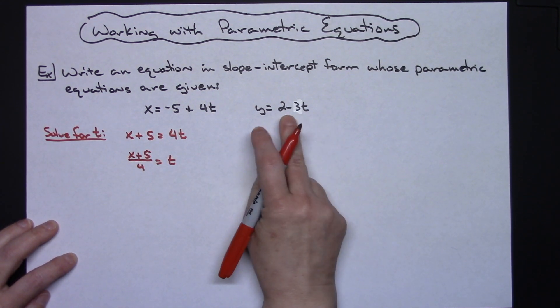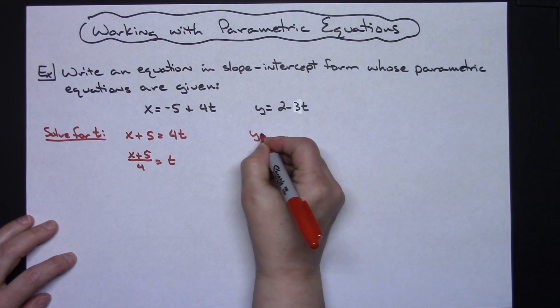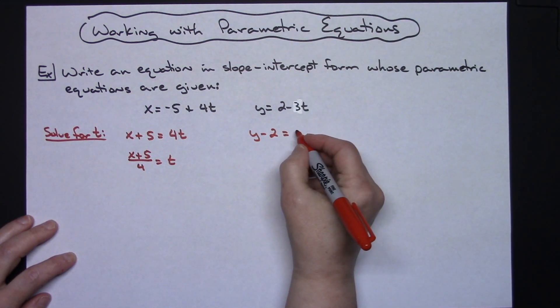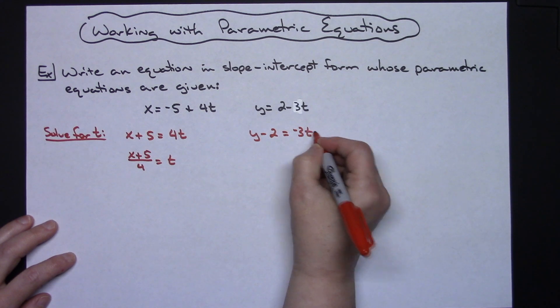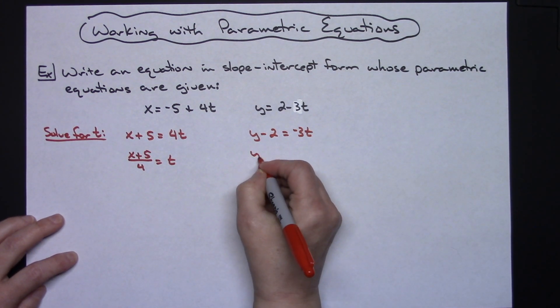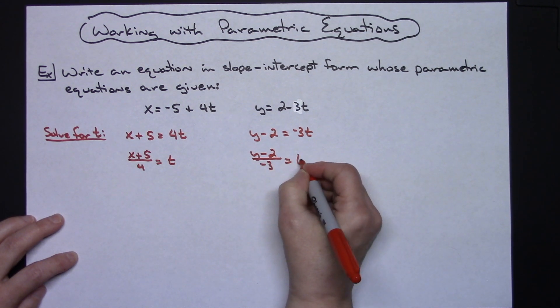I'm going to come over here and do the exact same thing to this equation. I'm going to subtract 2 from both sides, so I'll have y - 2 = -3t. Don't forget the negative. Divide both sides by -3, so I'll have (y - 2)/(-3) = t.